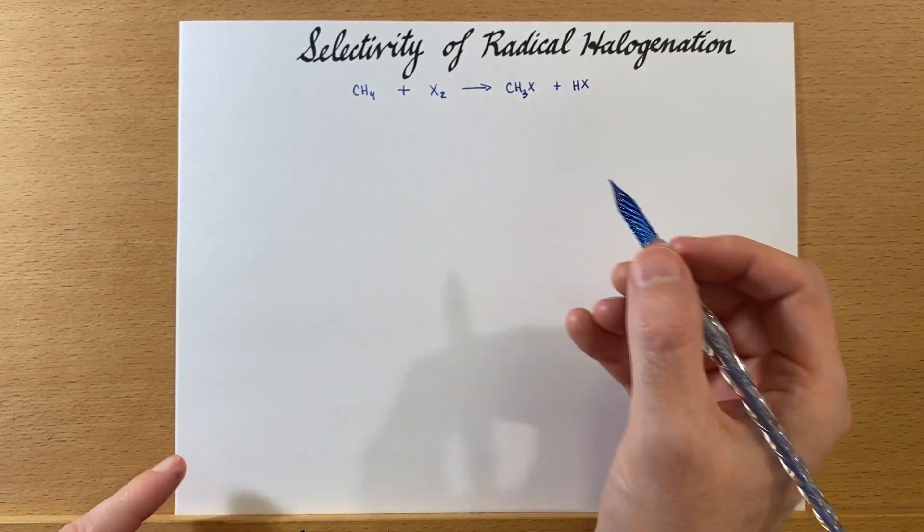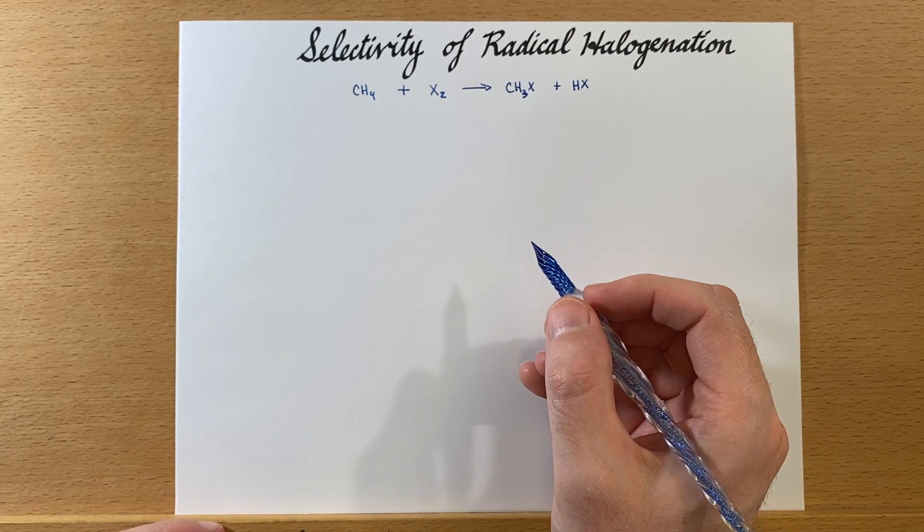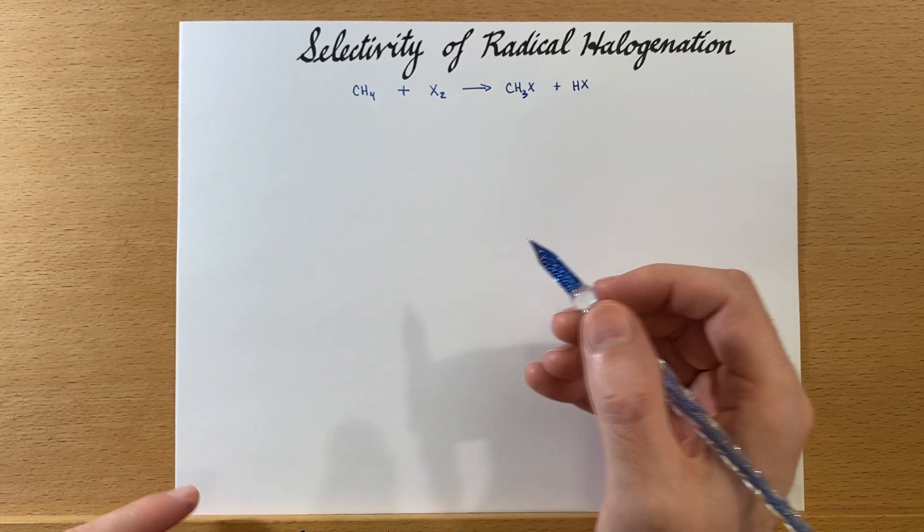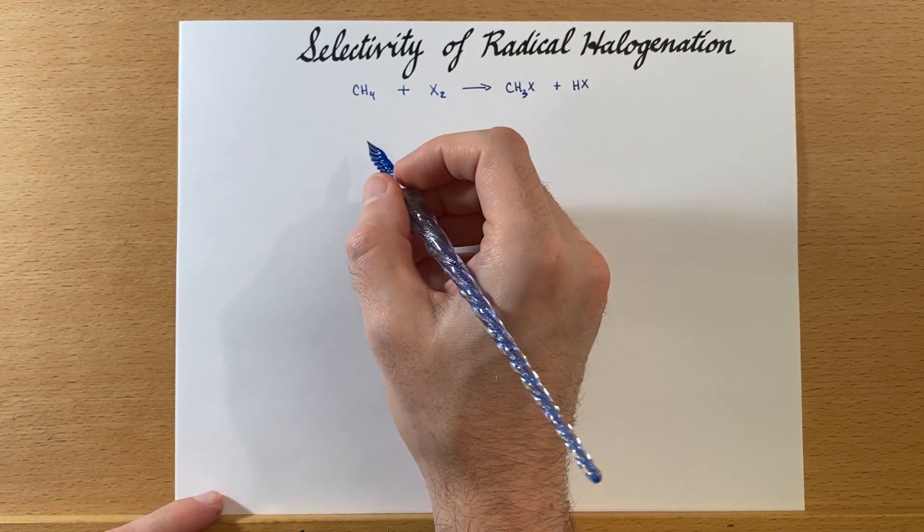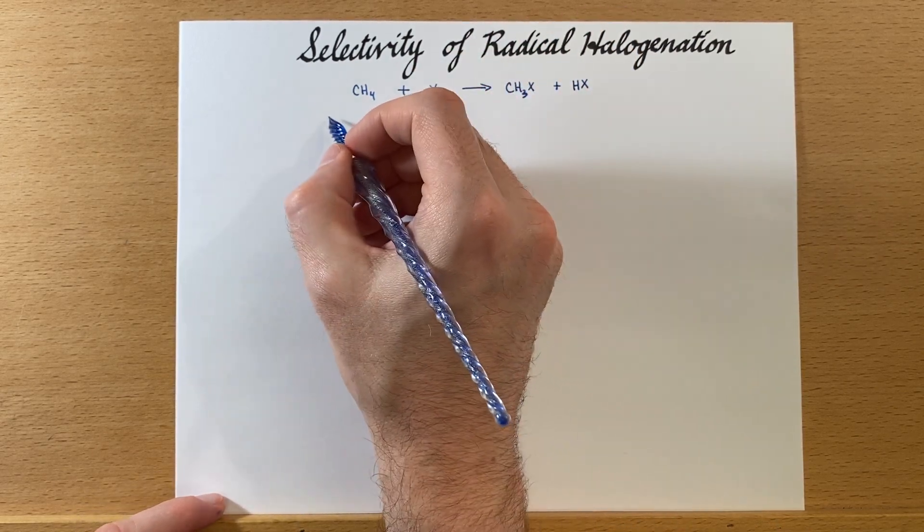There are several halogens that we like to use: fluorine, chlorine, bromine, and iodine. We usually don't use fluorine for a very good reason coming up.